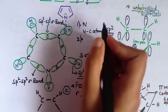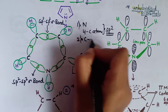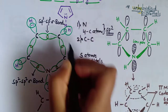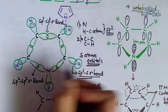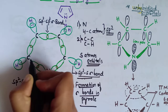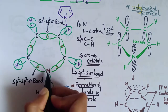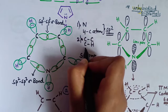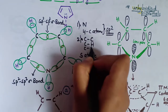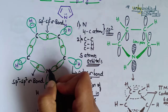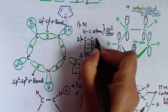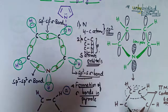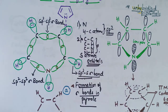The bonds present in pyrrole are: carbon–carbon bonds, carbon–hydrogen bonds, carbon–nitrogen bonds, and nitrogen–hydrogen bonds. These are the four types of bonds present in pyrrole.